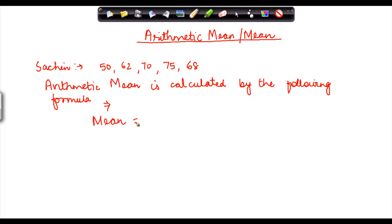Mean equals sum of all observations. What is an observation? An observation is nothing but the set of numbers that you have. In this case, your observations are these five numbers, and then you divide them by the number of observations.